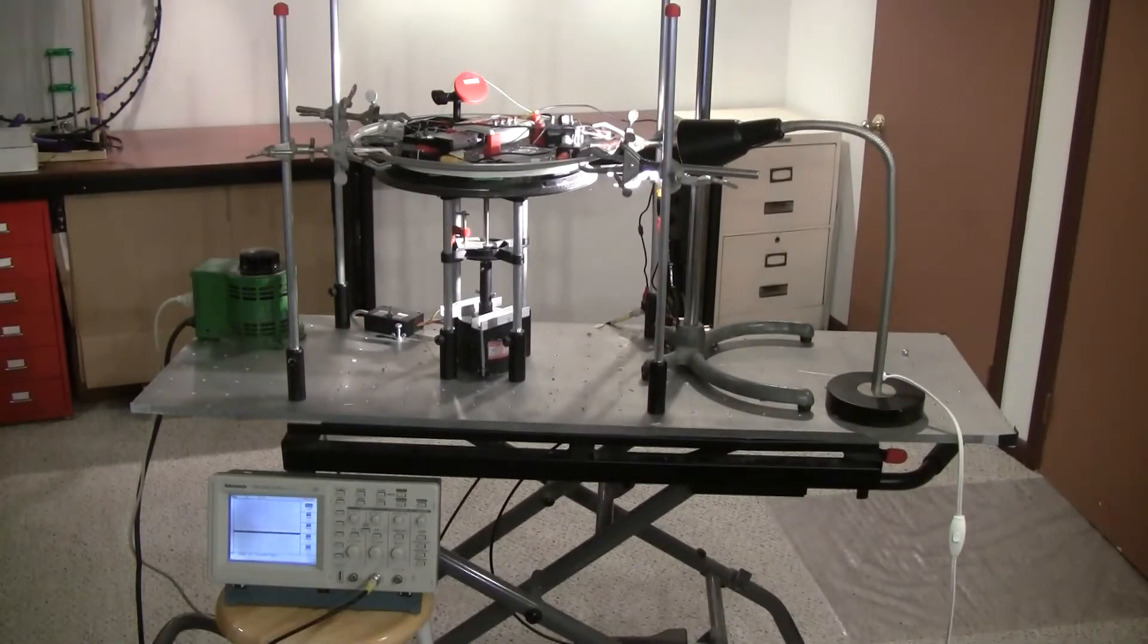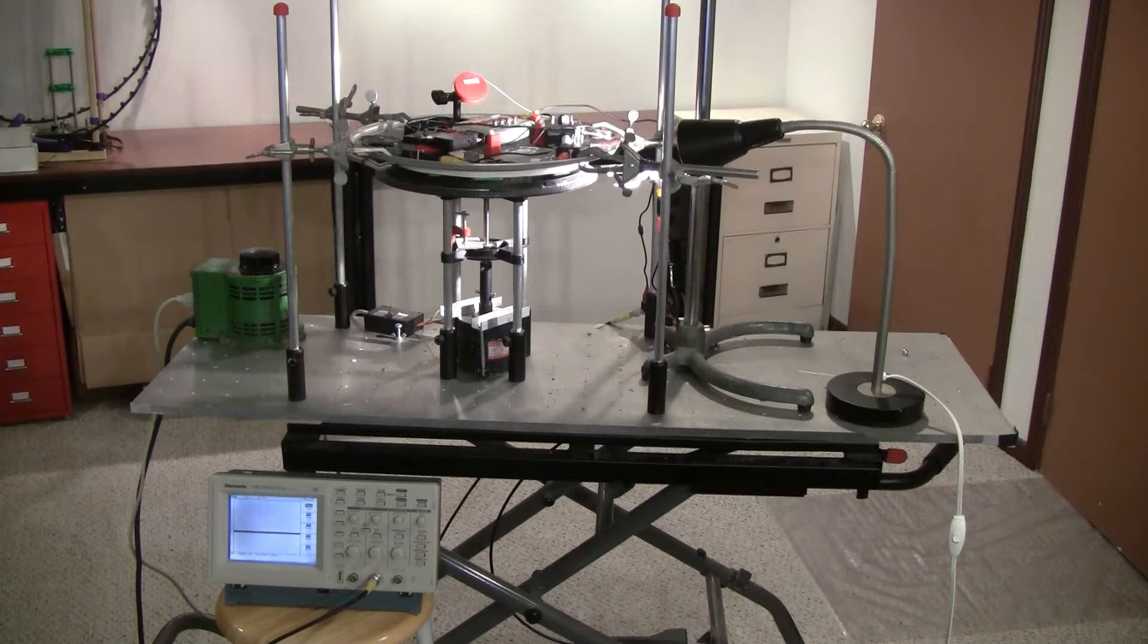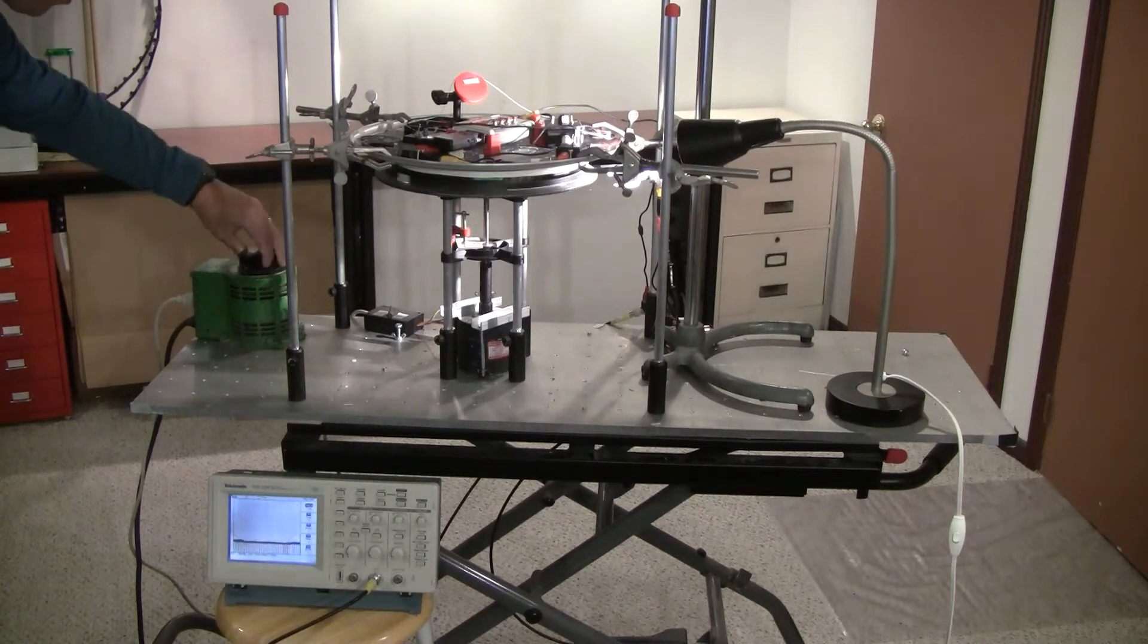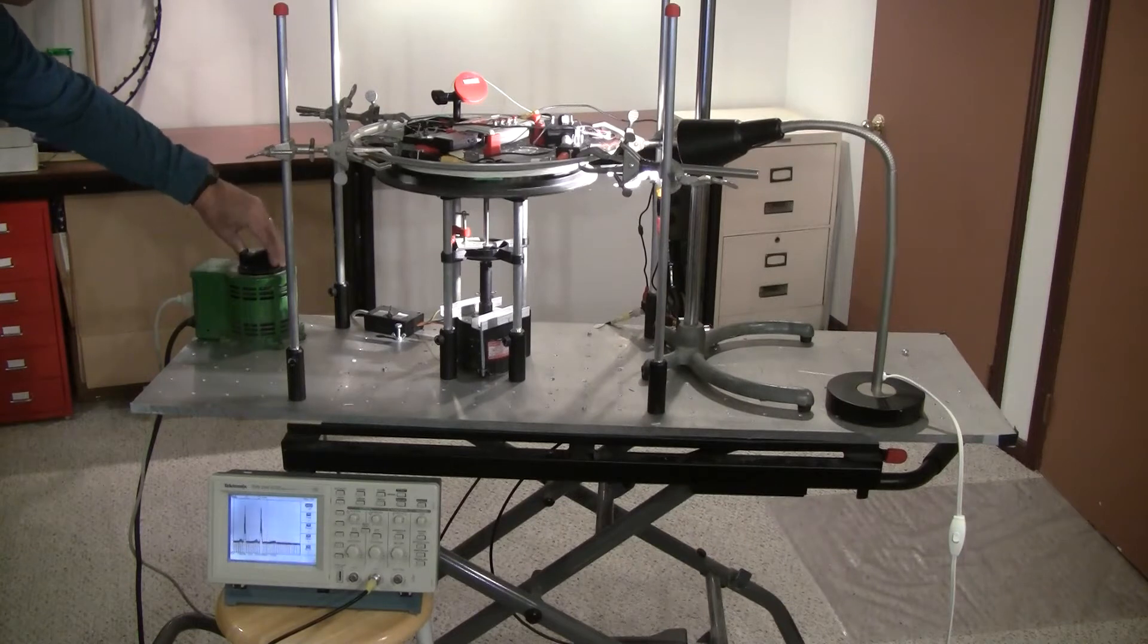So, we have the data logger set up and transmitting data, so we're ready to run our first test. We've energized the rotor, and we're going to try and get it up to about maybe 900 RPM.